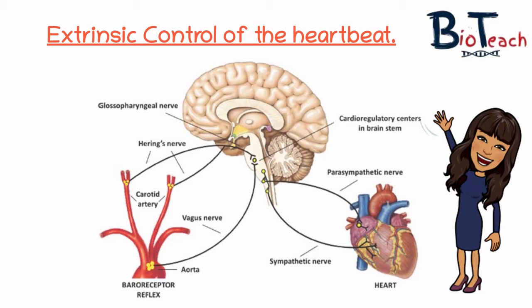The pacemaker of the heart sets the basic rhythm, but this rate is influenced by the cardiovascular control centre, primarily in response to sensory information from pressure receptors in the walls of blood vessels entering and leaving the heart. The main trigger for changing the basic heart rate is a change in blood pressure, and the responses are mediated through simple reflexes.